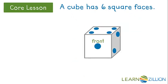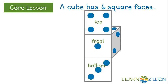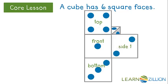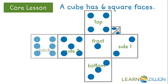The front would be square number 1, the top would be number 2, the bottom number 3, the right side would be 4, the left side would be square number 5, and if we could pull the square from the back, that would make six squares. A cube has six square faces.